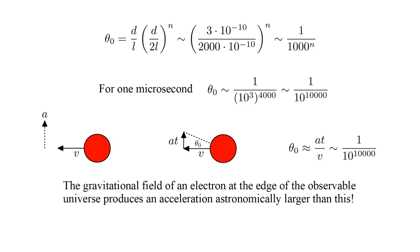Because ten to the ten thousand is such a huge number, the resulting acceleration is so small that it's dwarfed by the gravitational field of an electron at the edge of the observable universe. We conclude that it is impossible to specify the microstate of a real gas and to predict its evolution using equations of motion in any physically meaningful sense.